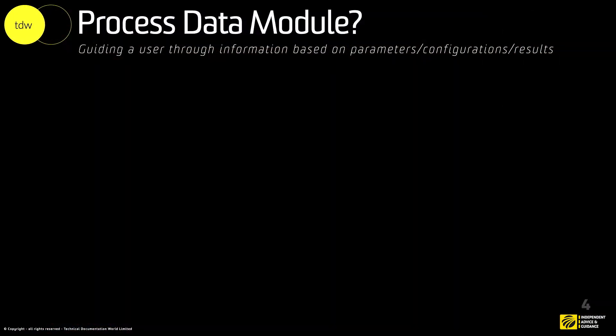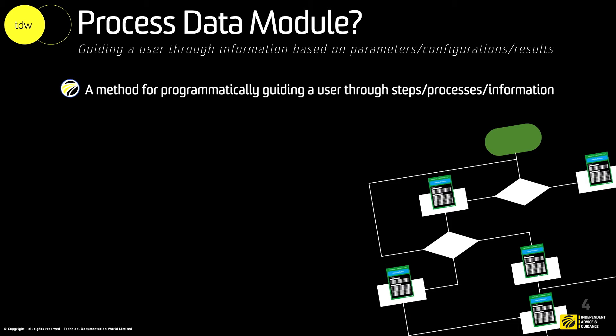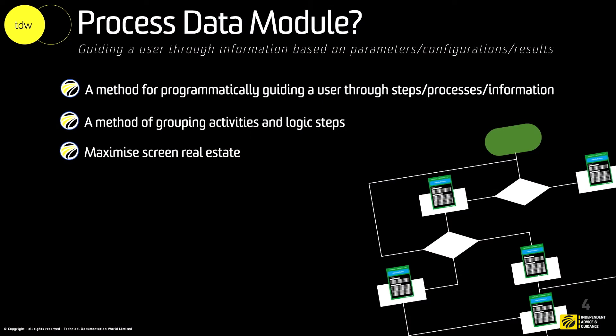The process data module really helps us guide our users through processes, as the name explains. We are taking the process flow that we've done forever and turning it into something called the process data module, which guides us through each individual step. The process data module is a method for programmatically guiding a user through steps, processes, or information. It's a method for grouping activities and logic processes or logic steps. We can maximize screen real estate, which is key. We don't want to keep taking users away from the content and the process they're currently in. The process data module allows us to keep them in one centralized location and present the information we want them to have.